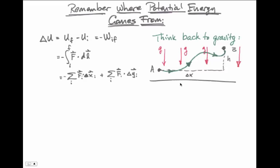We can break up that vector sum into two components, because the displacement may have an X component along the horizontal and a Y component along the vertical. In this case, the vector sum equals the sum of all the changes in X times the force in the X direction, plus all the sum of the changes in Y times the force in the Y direction.